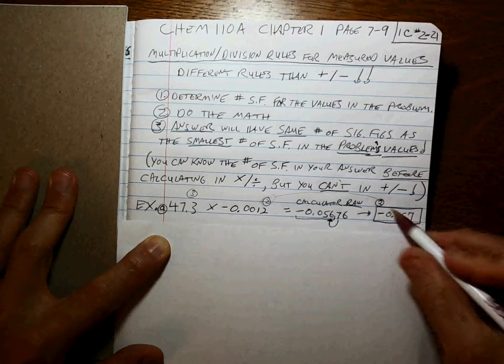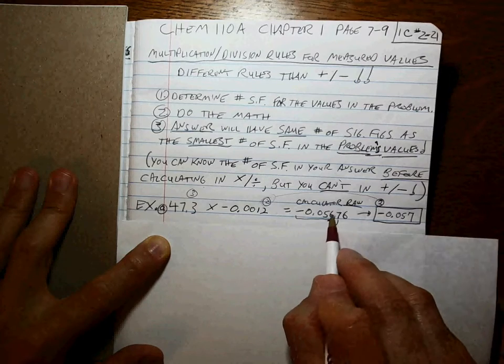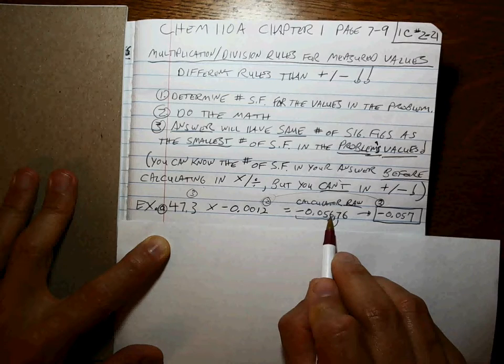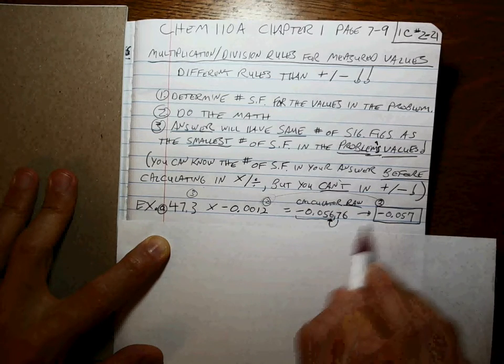So we've got negative 0.057. That number has 2 sig figs. That number is your last significant figure, and that number rounds it up. That's the right answer.